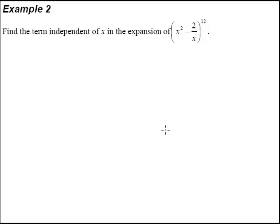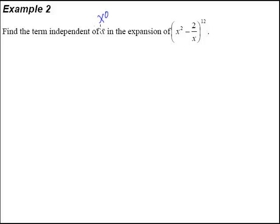Now let's take a look at example 2. Find the term independent of x in the expansion of x squared minus 2 over x, raised to the power of 12. The term independent of x means the constant term — the constant term whereby the x power is 0, so it's actually talking about x to the power of 0.